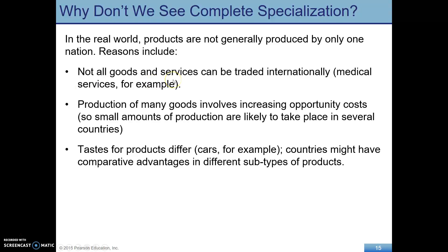In the real world, why don't we see complete specialization? Not everything can be traded — like medical services, you sometimes actually have to see the doctor, and you can't trade haircuts because the person has to be there. Production of many goods involves increasing opportunity costs, which means we'd see small amounts of production in lots of different places. Also, tastes for products differ — countries might have comparative advantages in different subtypes of products.